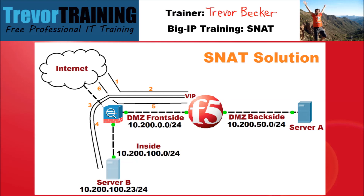5. The BIG-IP receives the response from Server B, updates the source and destination IP address fields back to the original values, and forwards it to the gateway. 6. The edge firewall receives the response, analyzes the destination IP address field in the packet, sees that it's a host on the internet, and forwards it out that direction. Because SNAT causes Server B to send the response back through the BIG-IP, the internet client sees that the response came from the same address it sent a request to, and consequently accepts the response.